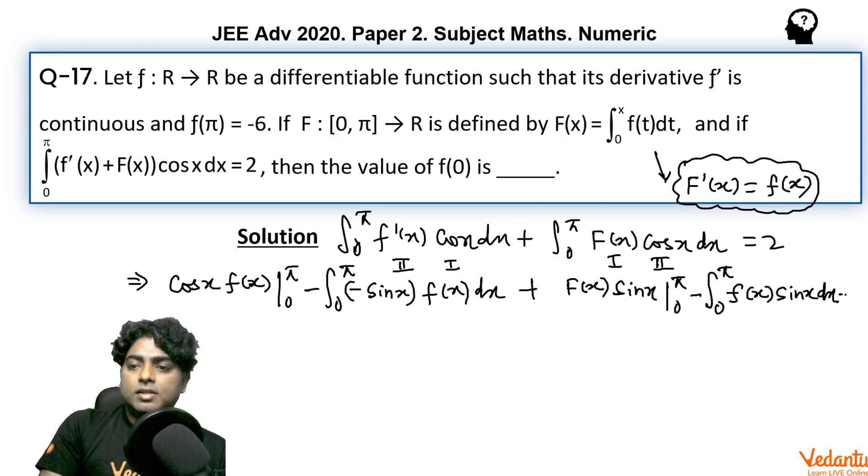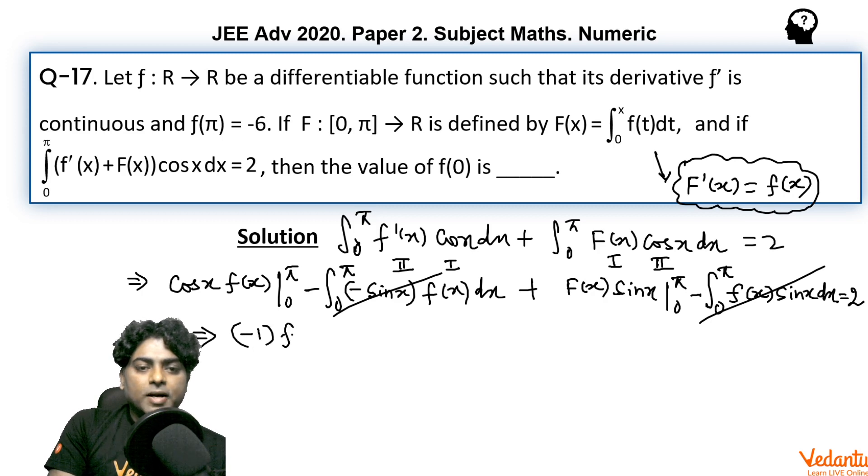And this is given to be 2. So you can easily see that two terms are getting cancelled by each other. Obviously.